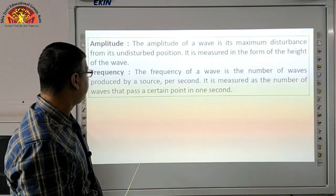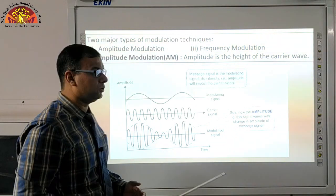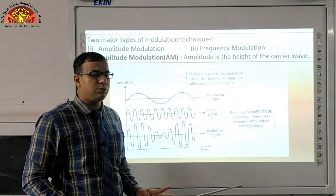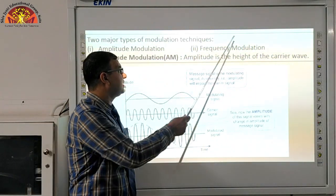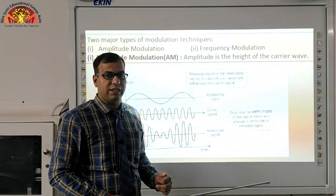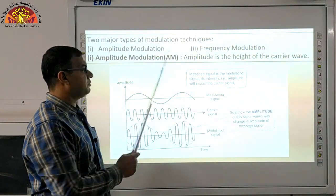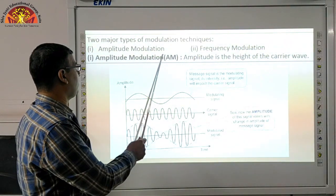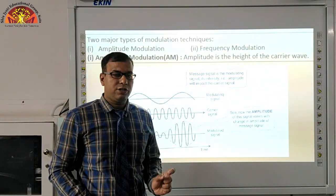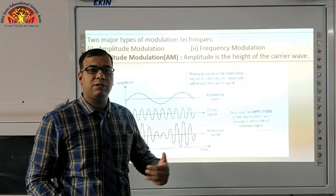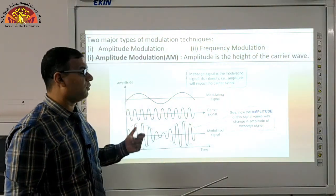Two major types of modulation techniques: first is amplitude modulation and second is frequency modulation. We will discuss amplitude modulation, abbreviated as AM. In this chapter, you will find many short forms, which are very important from the exam perspective, because in your exam you have to write the full forms of these short forms.